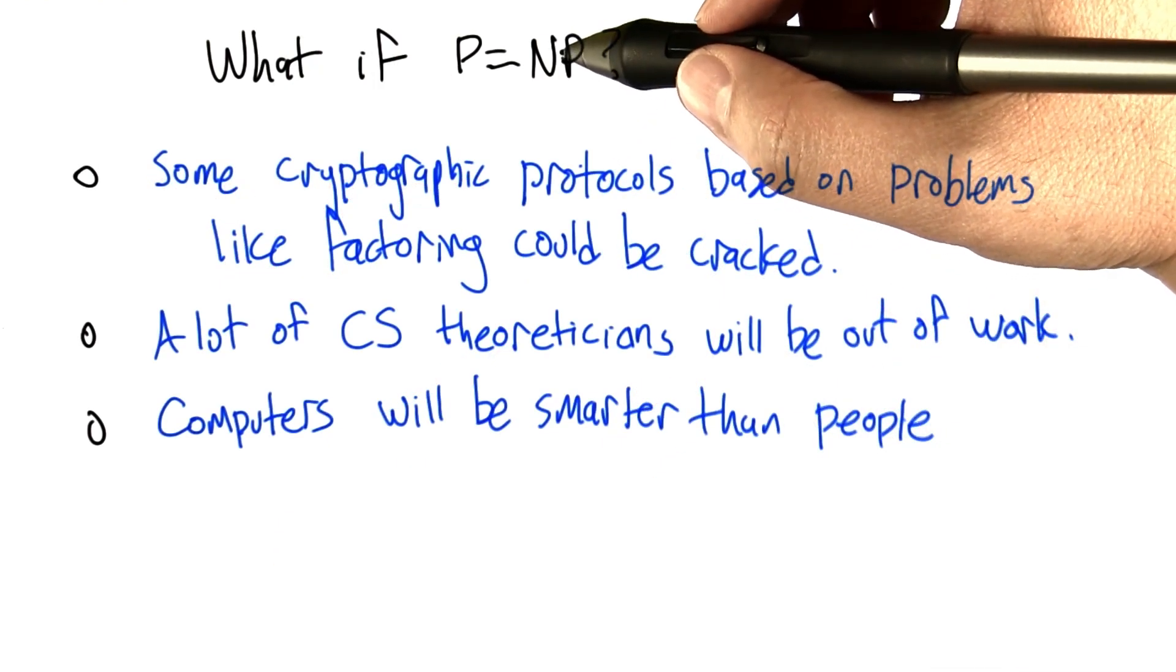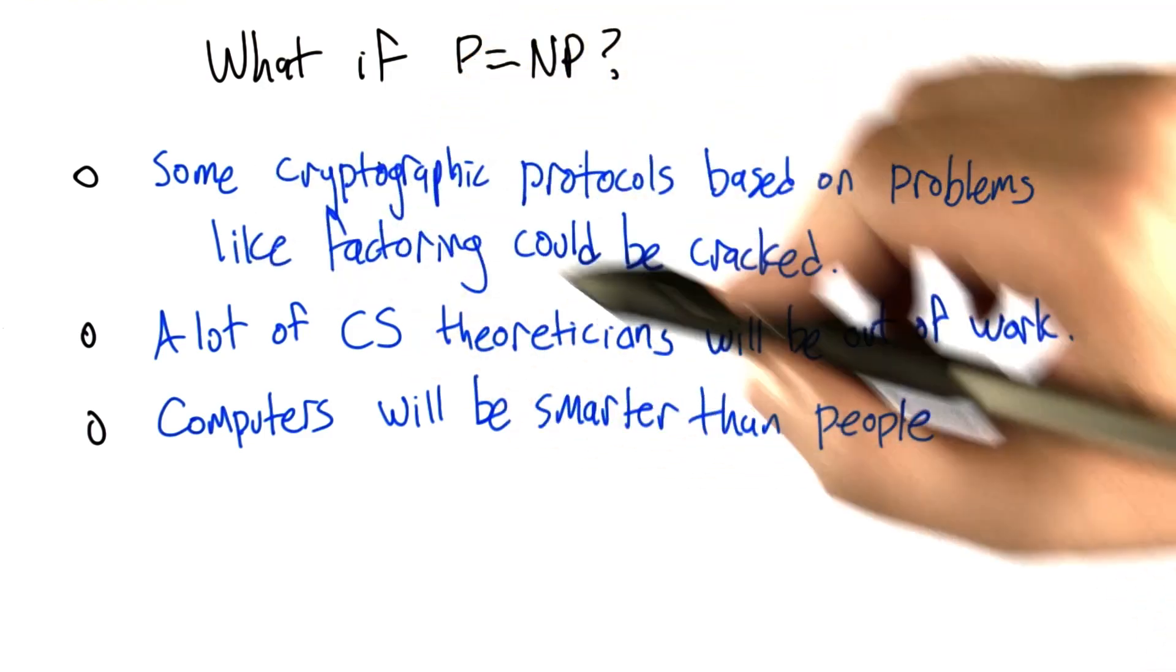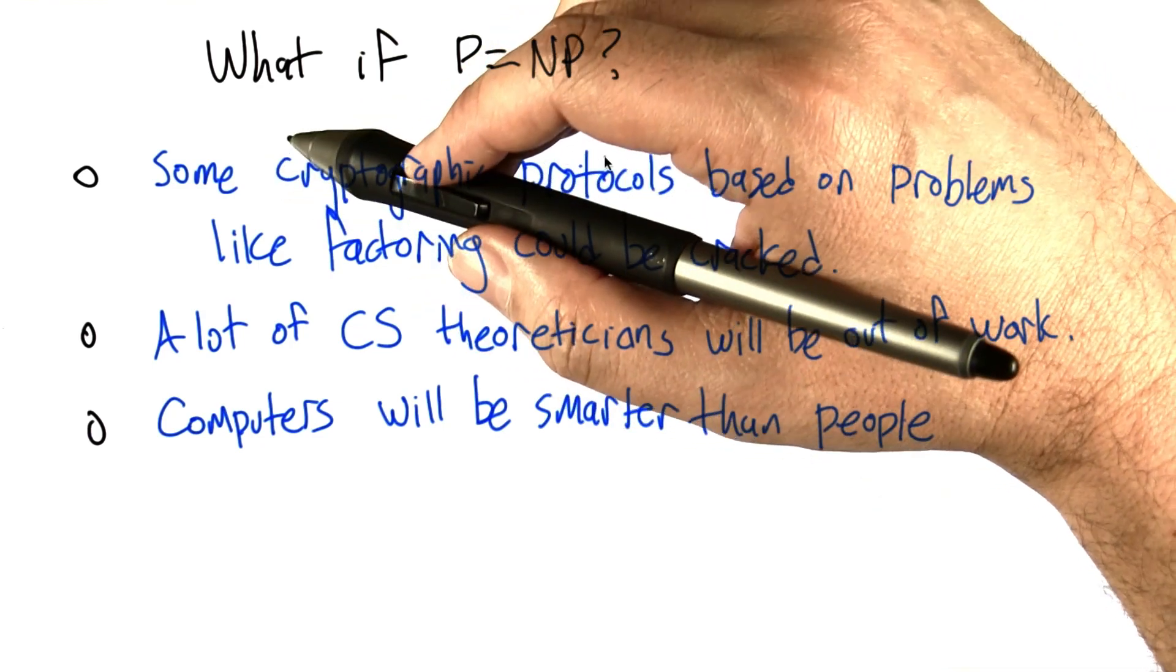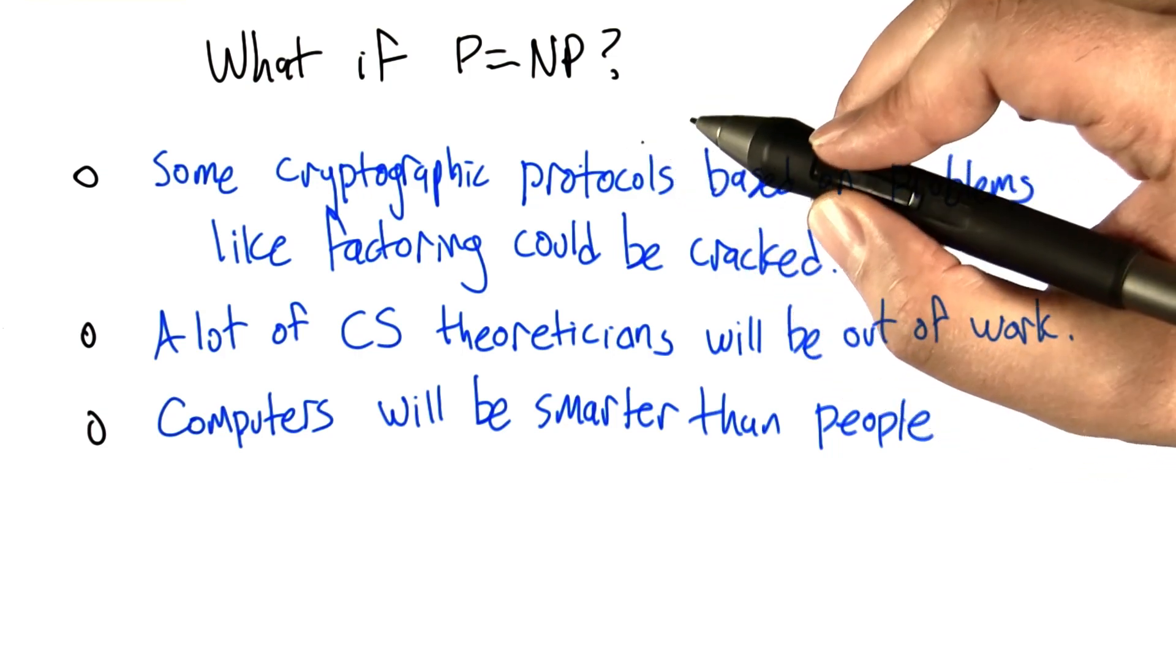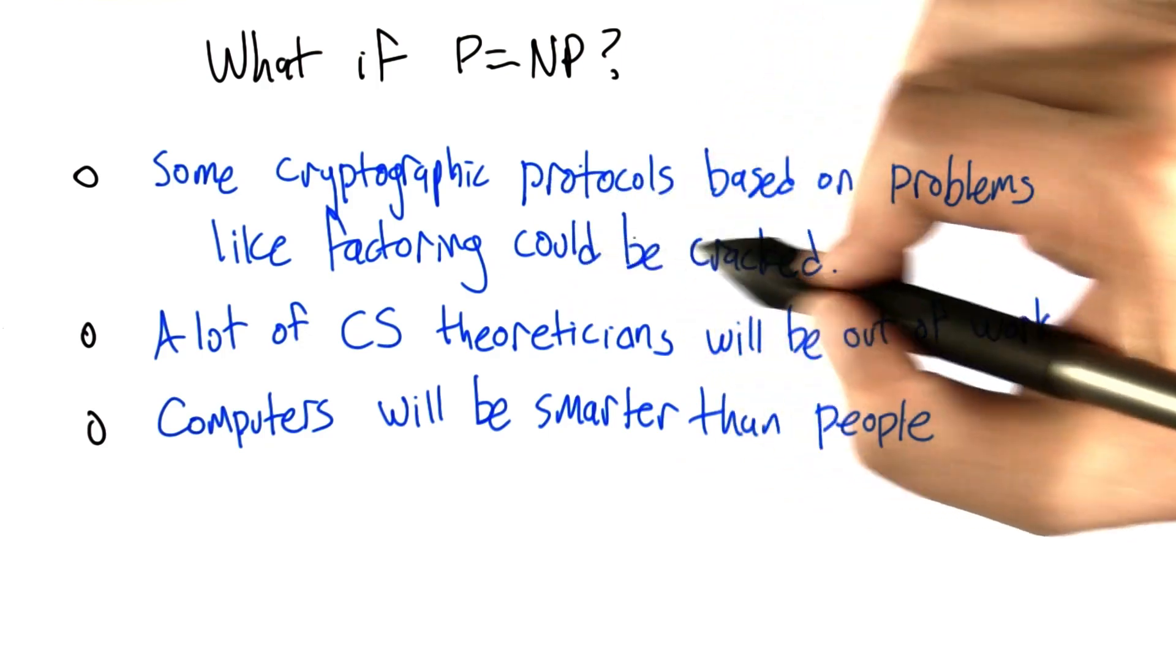So, what happens if P does equal NP? Well, a lot of people say a lot of different things. We'll just turn this into a quiz to see what you think. One possibility is that cryptographic protocols, things for keeping secrets and encrypting data, that are based on problems like factoring that are in NP, could be cracked.